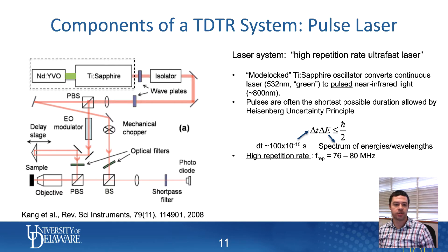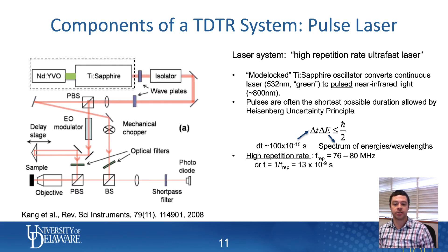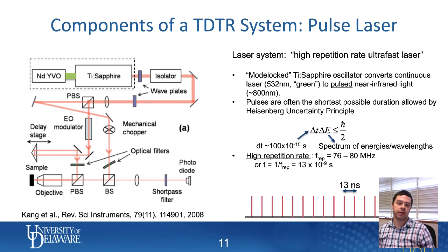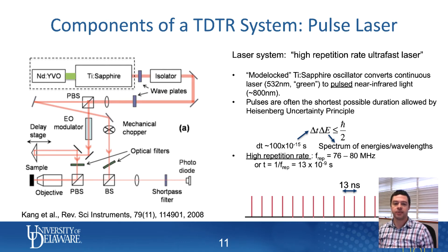You want these lasers to be at a high repetition rate. There are vendors who sell non-high repetition rate lasers, but by high repetition rate I mean typically somewhere between 76 to 80 megahertz. If you convert that into the time between pulses, that's about 13 nanoseconds between pulses, give or take a couple of nanoseconds depending on what system you buy. The pulse itself is very short: 100 femtoseconds is 0.1 picoseconds, which is 0.00001 nanoseconds — an extraordinarily short pulse compared to the time between pulses.